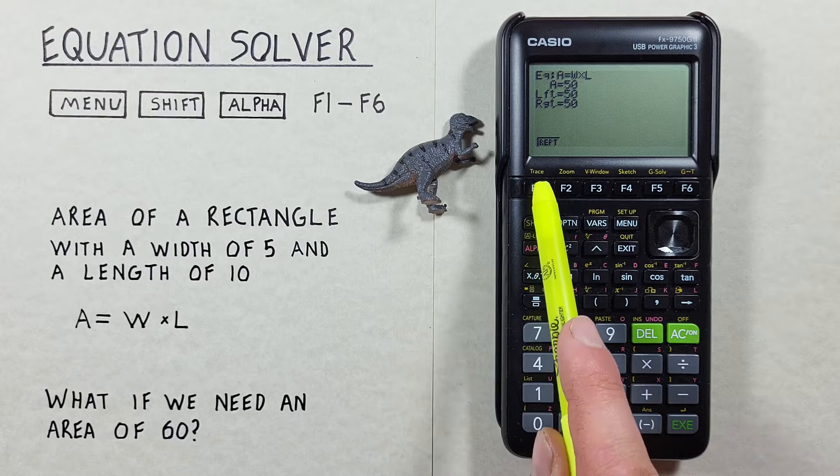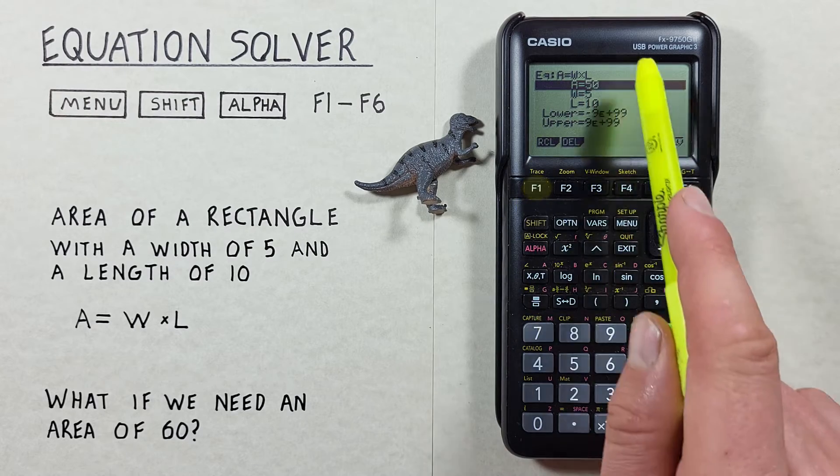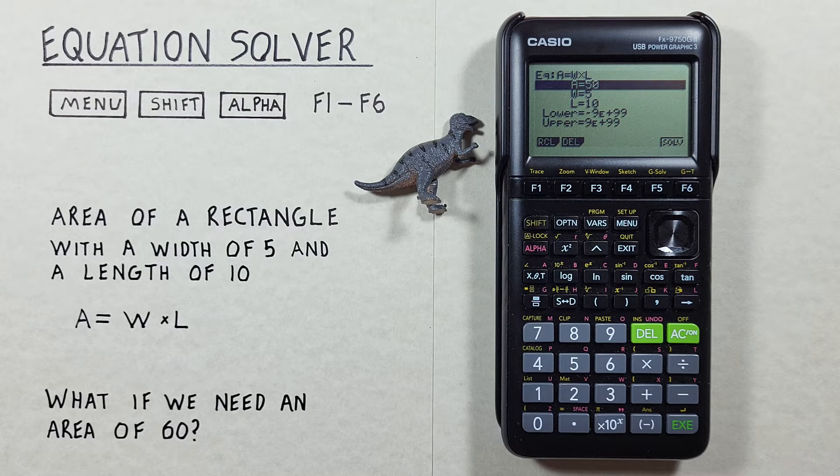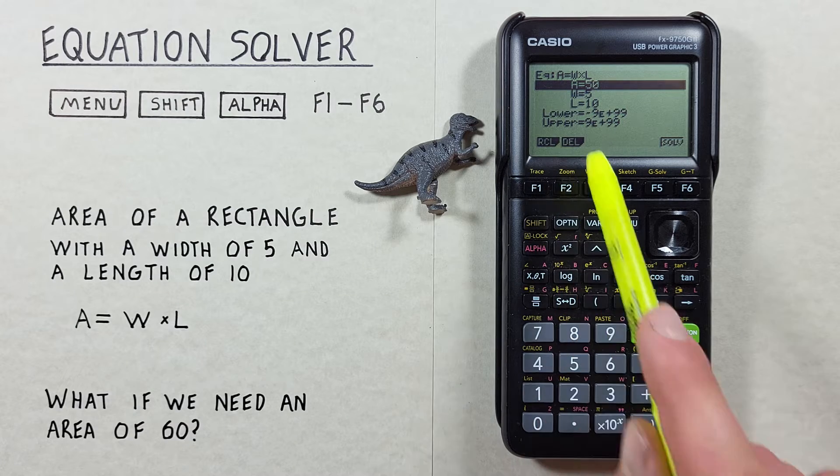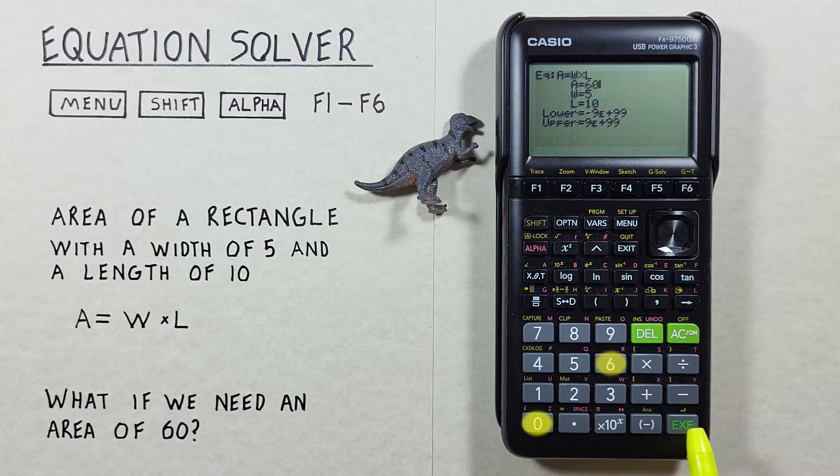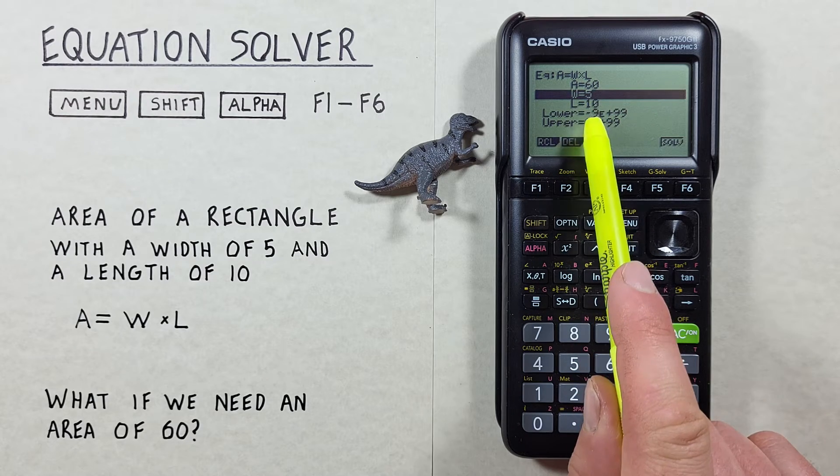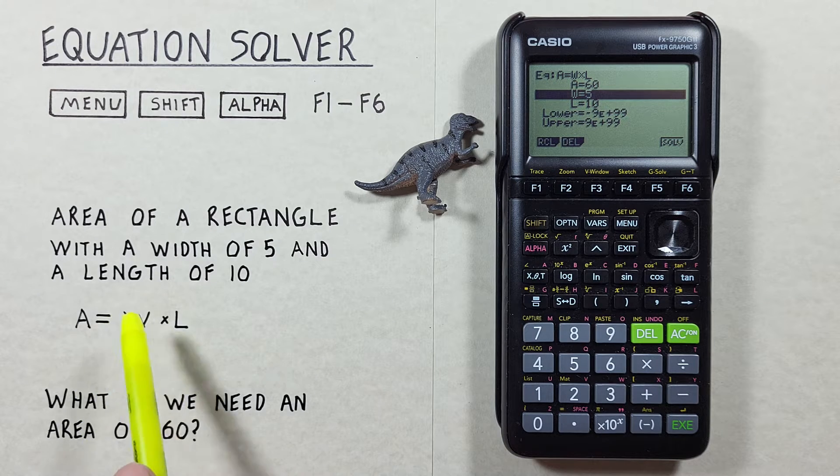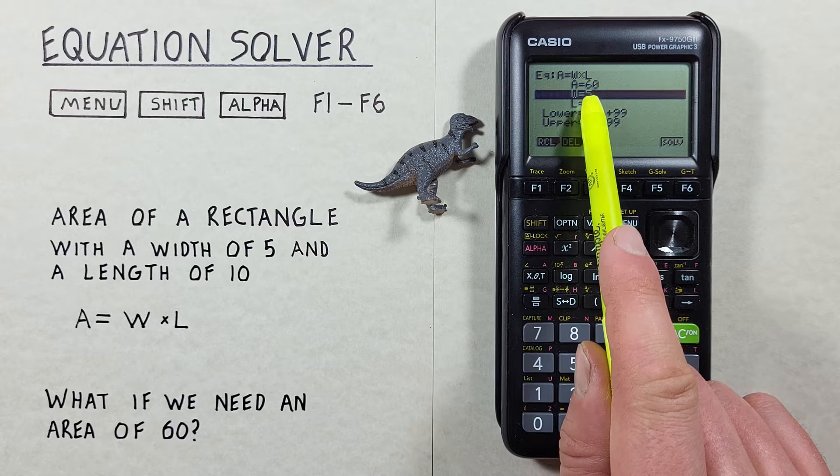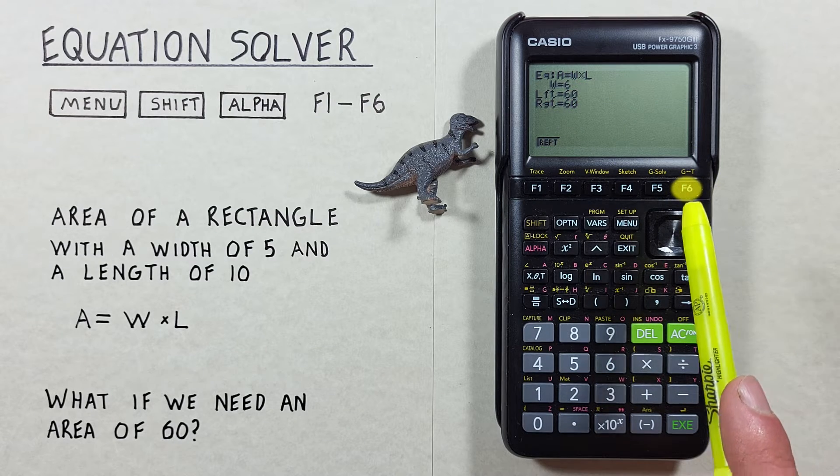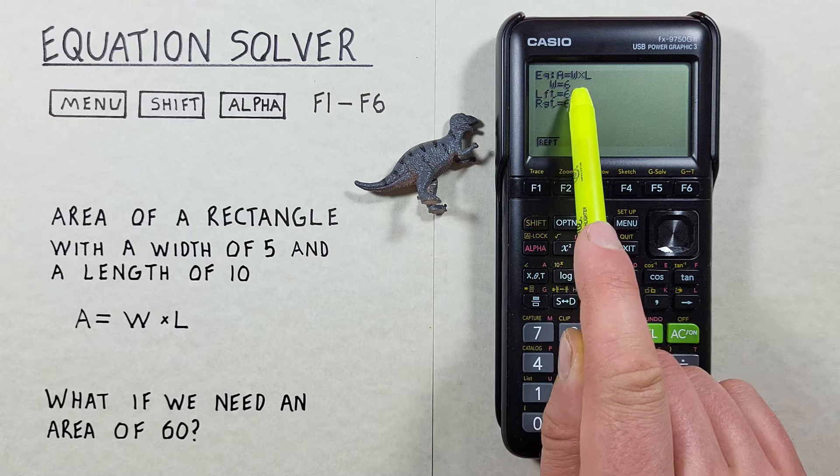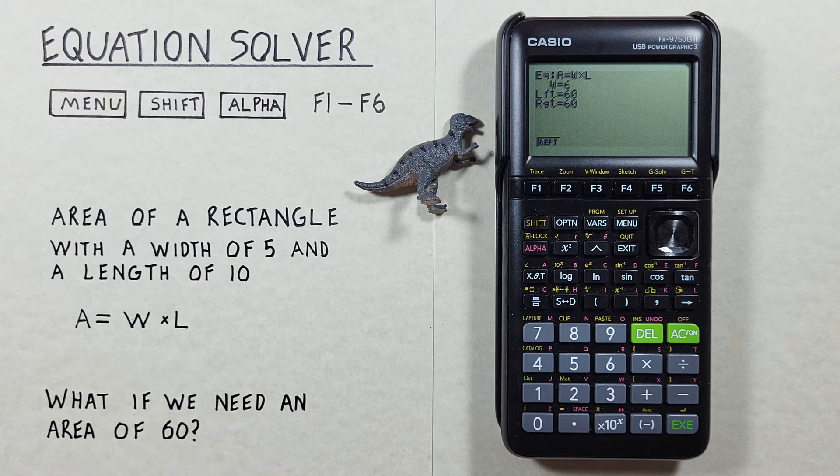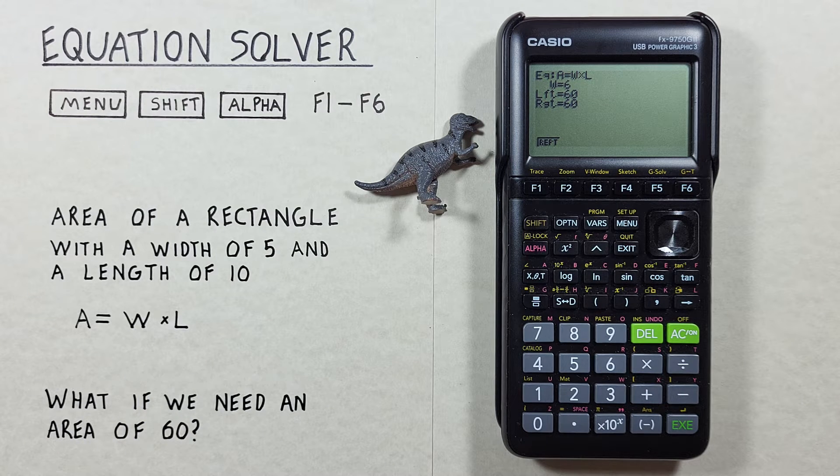To go back, we hit F1. Now it brings us back to our formula or our equation here. What if we needed to get an area of 60 on our rectangle? Well, we need to then change our area to 60, and then we need to either solve for the width or the length to change that to get 60. Let's say we want to keep our length at 10. So we'll scroll to our W, width, and hit solve. We now see our width has been solved for 6, which makes sense because if we want an area of 60, we need 6 times 10. Again, we can go back with the F1.